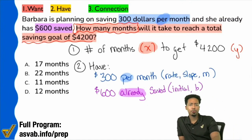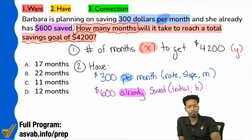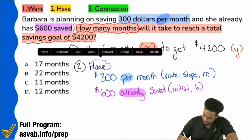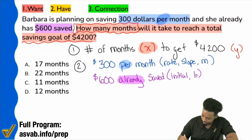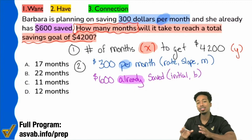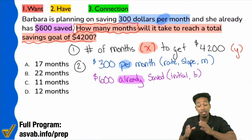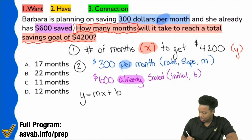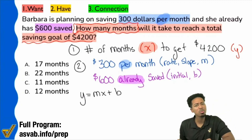Do we have enough to set the Y equals MX plus B up? Yes, we absolutely do. So let me go ahead and give myself a little more space to write this out. Y equals MX plus B. Which one of these are we looking for? We're looking for X.